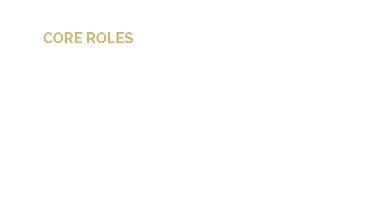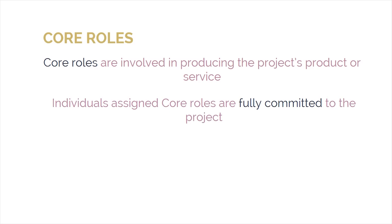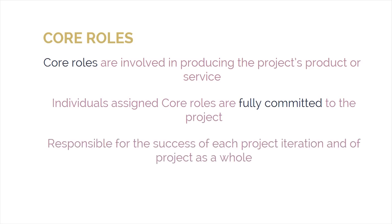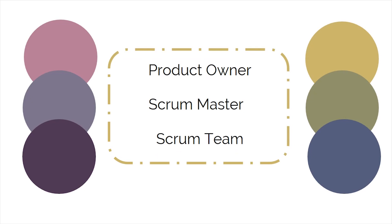Core roles are those that are involved in producing the project's product or service. Individuals assigned core roles are fully committed to the project and are ultimately responsible for the success of each project iteration and of the project as a whole. Core roles are assigned to the product owner, Scrum master, and the Scrum team. Let's meet them one by one.